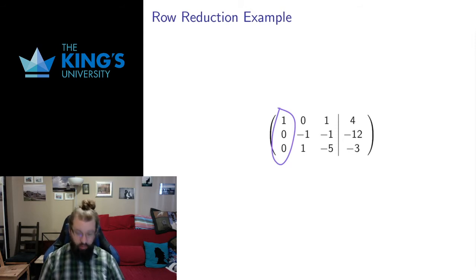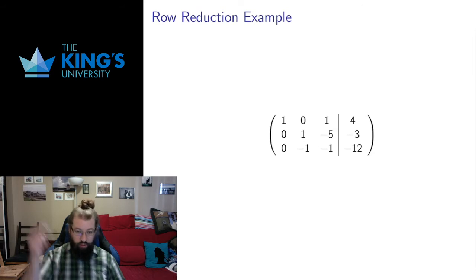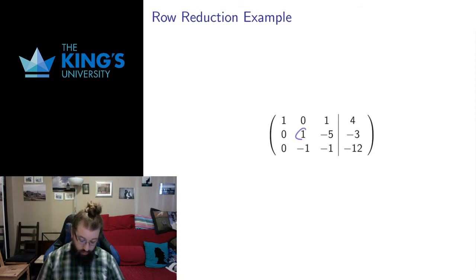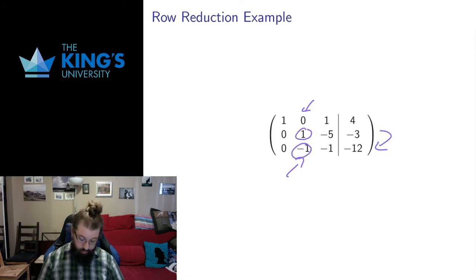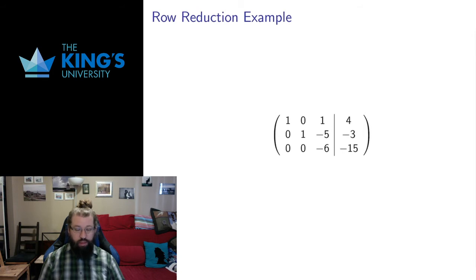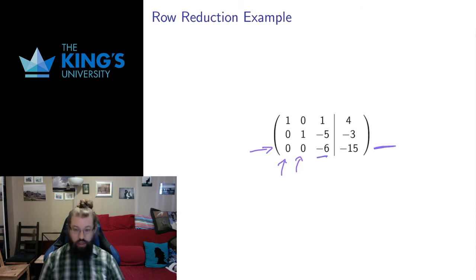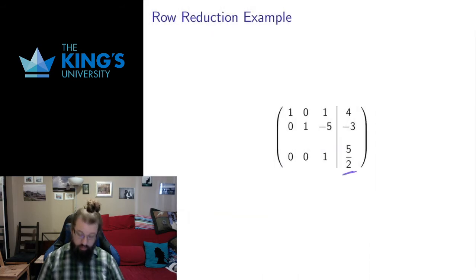Now I move on to try and produce another leading one. I already have one in my third row. I'm going to interchange the second and third rows because I'd like to have my leading ones start from the top of the matrix — that's mostly convention, but I'll do it anyway. Then I've got a leading one; above it is already 0. I want to clear the 0 below it, so I'm going to add the second row to the third row. Negative 1 plus 1 gives 0; negative 1 plus negative 5 is negative 6; negative 12 plus negative 3 gives negative 15. Now I want to get a leading one in the third row, so I divide by negative 6.